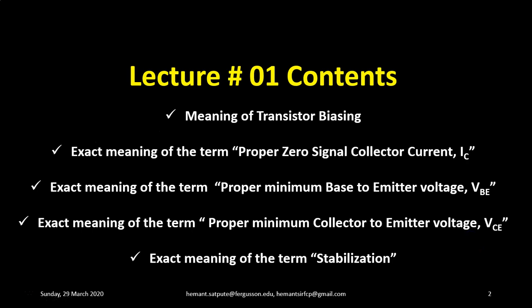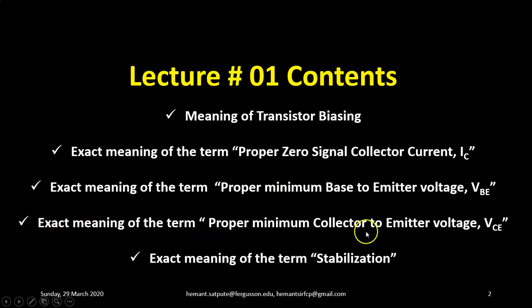In this lecture number one, we will be discussing the meaning of the term transistor biasing, the exact meaning of proper zero signal collector current IC, proper minimum base to emitter voltage VBE, proper minimum collector to emitter voltage, and the exact meaning of the term stabilization. Remember, all these terms are used again and again regarding transistor biasing, so this lecture specially devotes time to understanding their exact meanings.